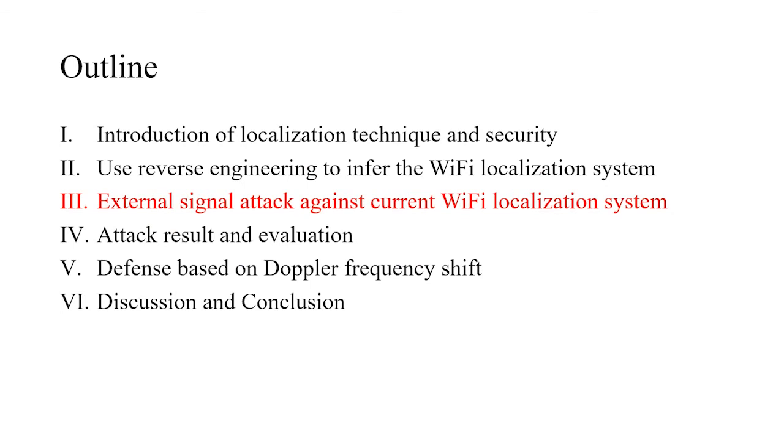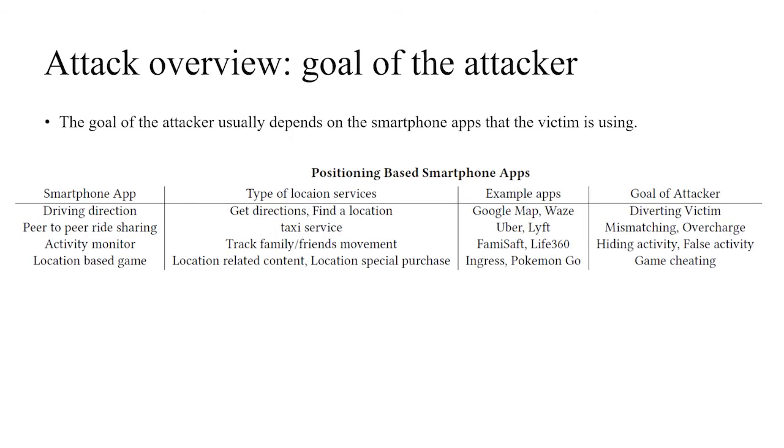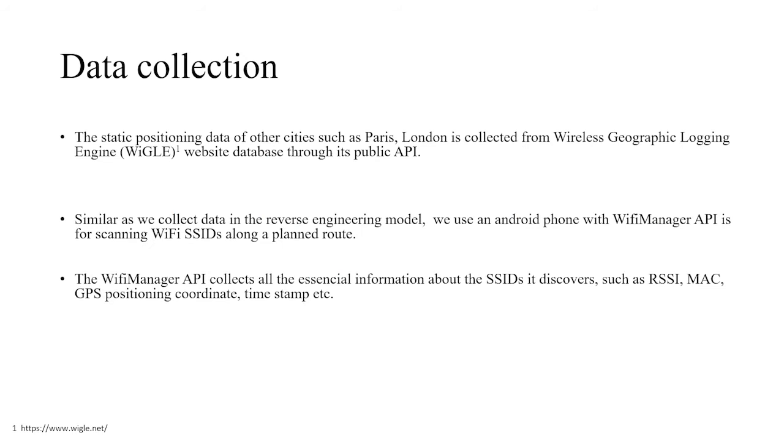Now we go to the third part: external signal attack against current WiFi localization. First is the goal of the attacker - it depends on what kind of app the user is using. For driving direction, the attacker may want to divert the victim. For peer-to-peer ride sharing, the attacker may want to overcharge the victim. For location-based games, the attacker may want to cheat some games. Before the attack, the attacker needs to collect some data. The static data is collected from the vehicle and the dynamic data is similar as we collect the data in reverse engineering.